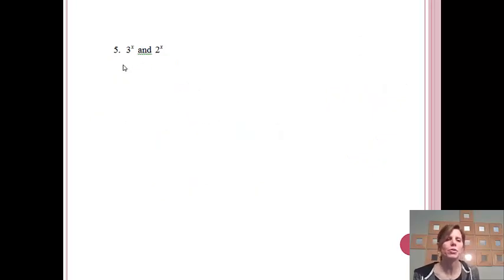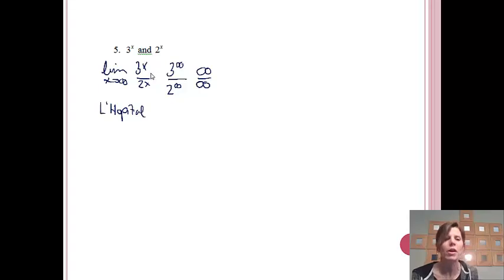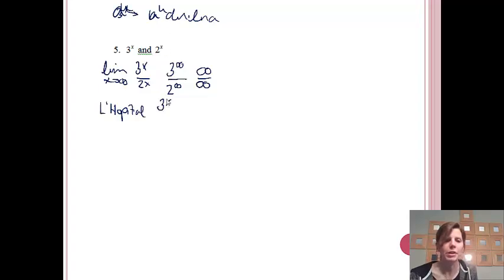Now comparing 3ˣ and 2ˣ: find the limit as x approaches infinity of 3ˣ over 2ˣ. Plugging in infinity gives infinity over infinity — indeterminate. However, note that the derivative of aˣ is aˣ · ln(a), so applying L'Hôpital's Rule gives 3ˣ · ln(3) over 2ˣ · ln(2). Notice that 3ˣ and 2ˣ remain in the problem no matter how many times we apply L'Hôpital — so that approach won't get us anywhere.